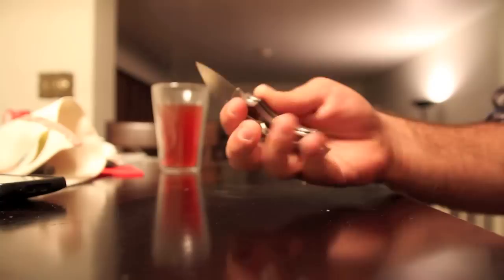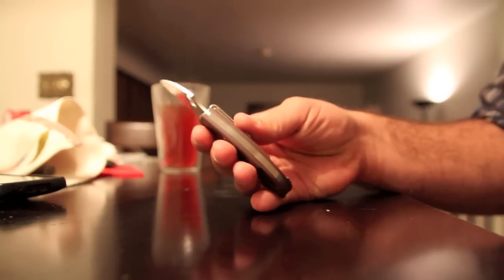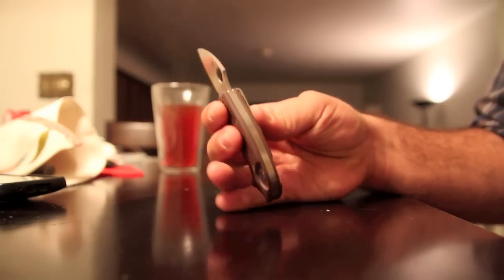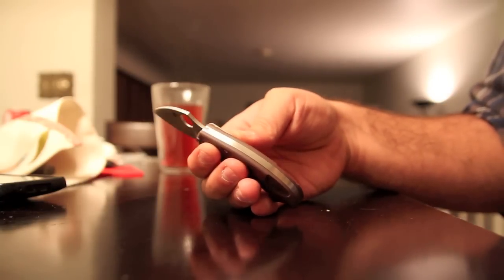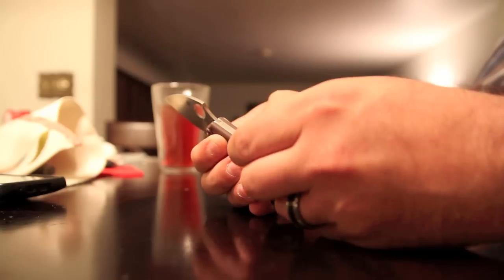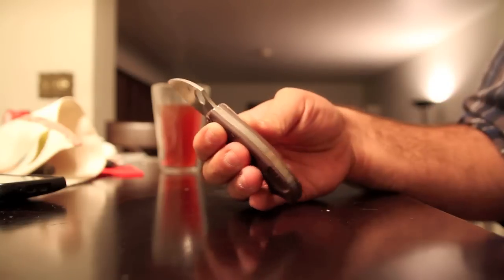Let's open it up. And that backspacer there is actually, I don't know if you're going to be able to see it or not, it's actually two stainless steel liners with a lock bar in the middle.